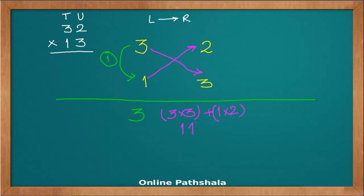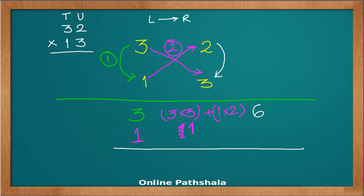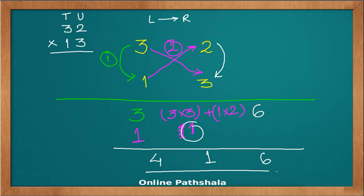We retain only one digit from the result — if there is an extra digit it becomes a carry forward. So from 11 we write 1 here and carry the 1 forward. Step 3 is to multiply the units digits: 2 into 3 gives 6. Summing everything up, we get 416 as the answer.